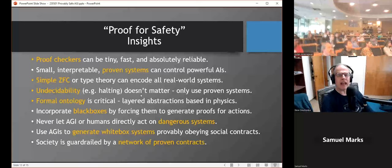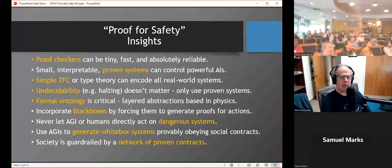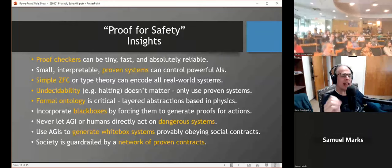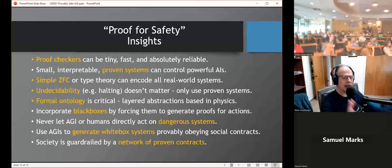So how do we use this for safety? Here are a few insights that give rise to the thought that perhaps mathematical proof can serve as a basis for safety. First, as I mentioned, proof checkers can be tiny, fast, and absolutely reliable. Small, interpretable, proven systems can control powerful AIs. Think of like a very rigid police officer who does exactly what he's told. He could still control Einstein in some sense. Simple Zermelo-Fraenkel set theory or type theory can encode all real-world systems. Things like undecidability, like the halting problem, don't really matter. We don't care about proving any system what its properties are. We're designing these systems, and we're only going to use systems that we can constrain by proof. The formal ontology that we use to describe the system is critical, and the way to think of it is as layered abstractions, sort of like the OSI layers in network theory. The bottom layer is physics, and the upper layers are the kind of programming that we think about.